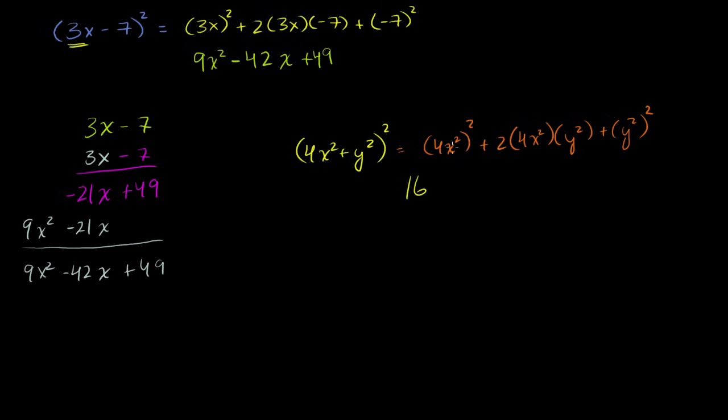x squared squared. That's 2 times 2. So it's x to the fourth power. And then plus 2 times 4 times 1. That's 8x squared y squared. And then y squared squared is y to the fourth.